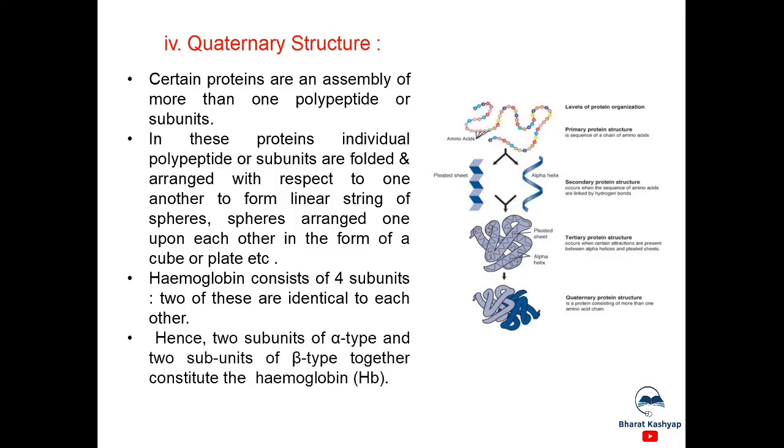Hemoglobin consists of four subunits. Two of these are identical to each other. Hence, two subunits of alpha type and two subunits are of beta type together constitute the hemoglobin. So, hemoglobin is a quaternary protein.